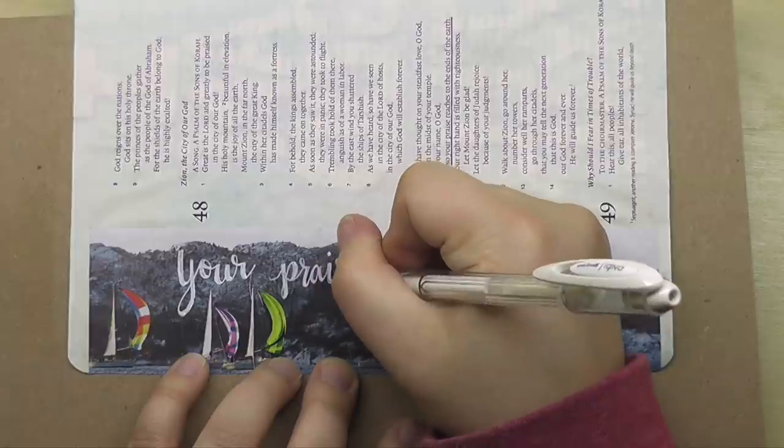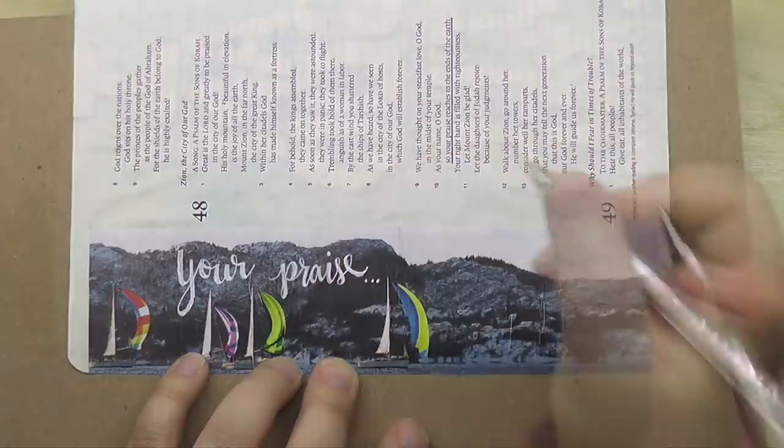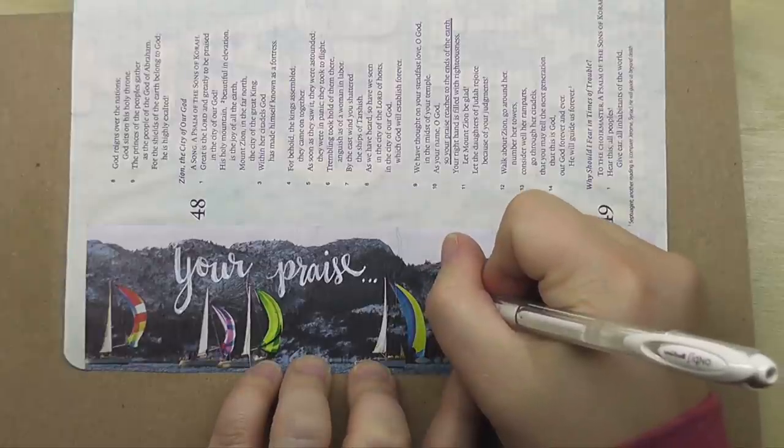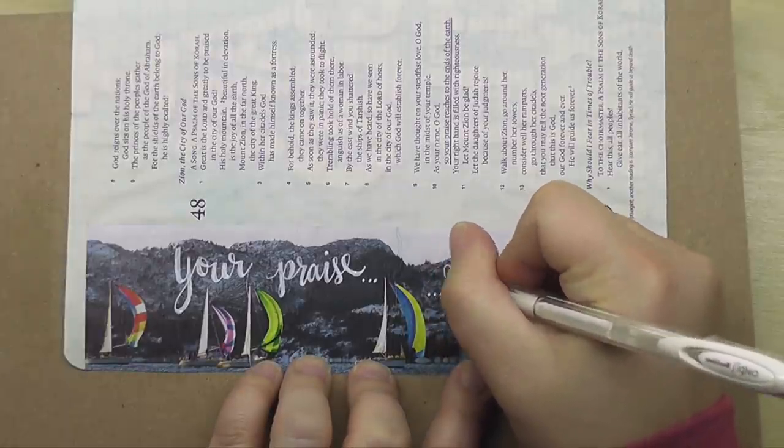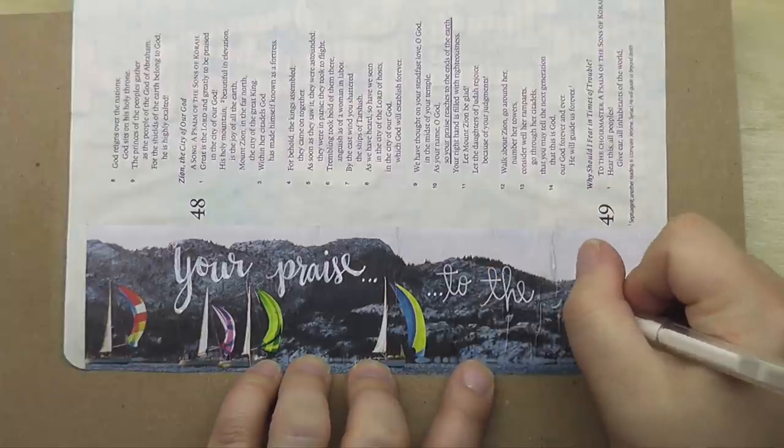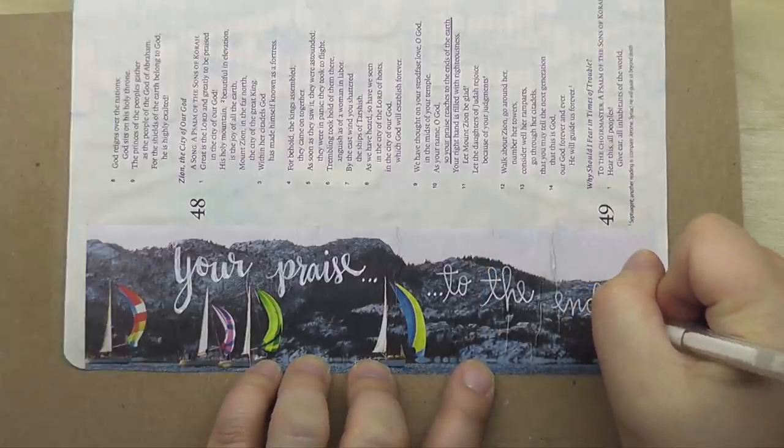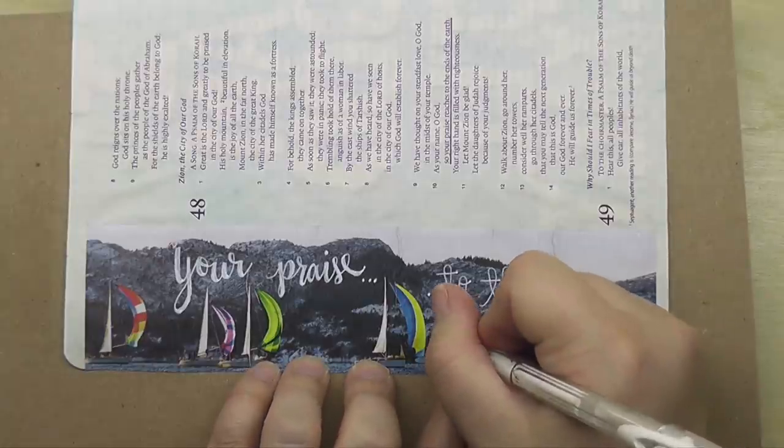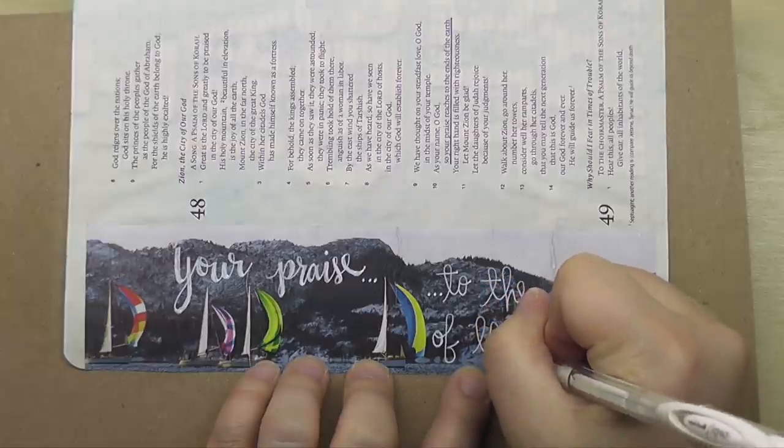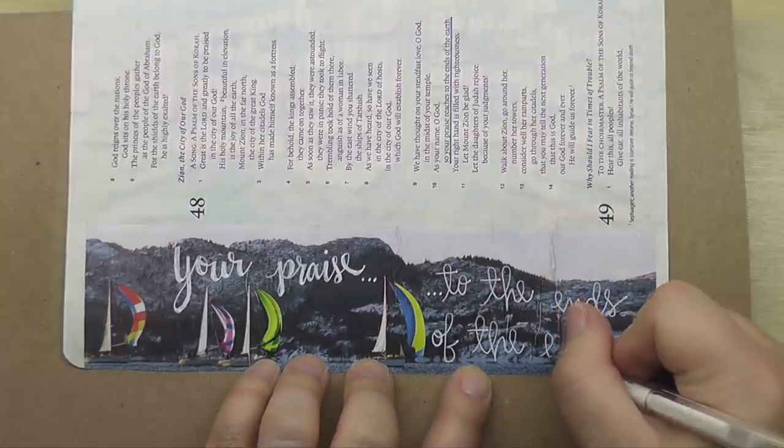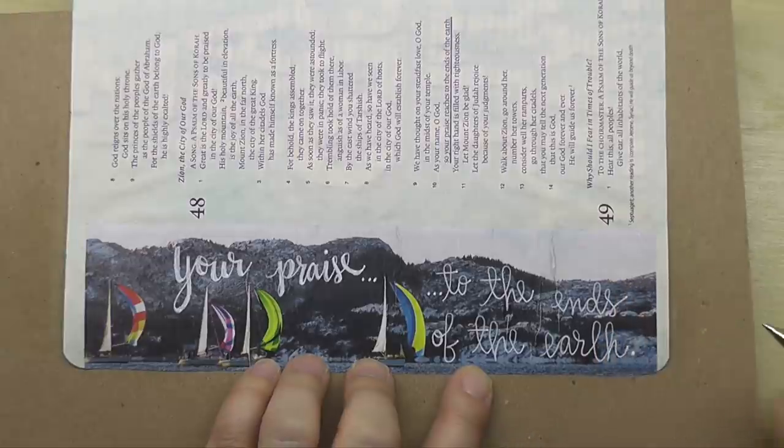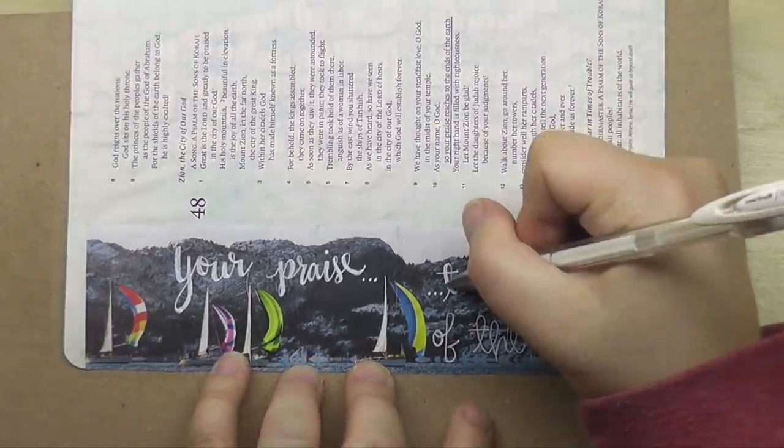So I grabbed this Uniball Signo gel pen in white, and I just wrote down your praise, and then because my space was a little bit limited there in the margin, I just said to the ends of the earth. And I'm just doing this freehand very slowly. It's just a cursive script that kind of floats up and down as you need it, which is great, because I wanted to keep it on the mountains. If I kind of strayed into the sky with this white pen, you wouldn't be able to see it very well.